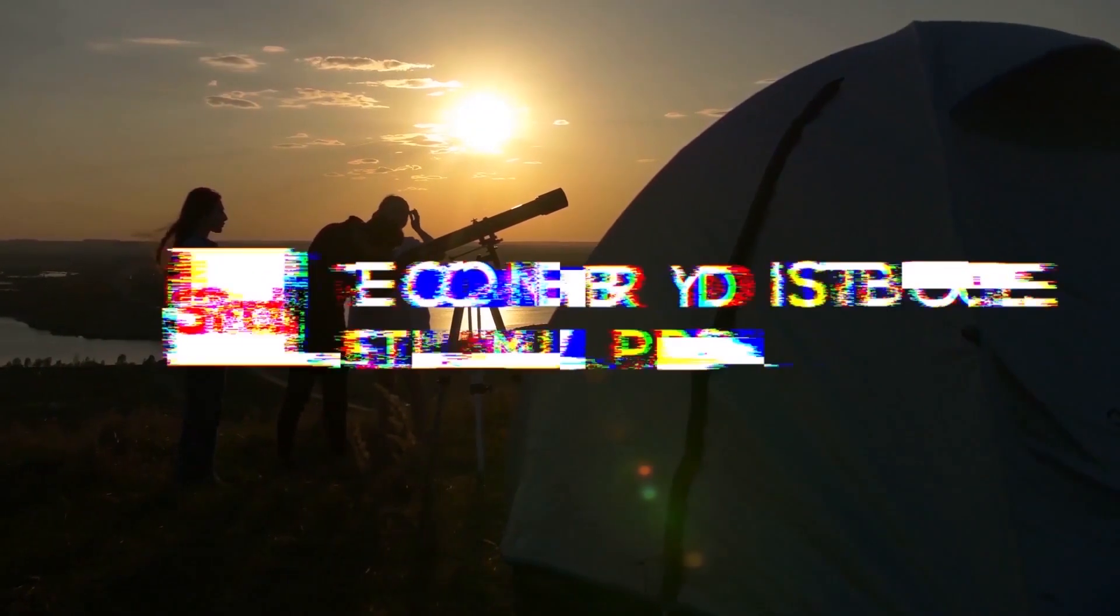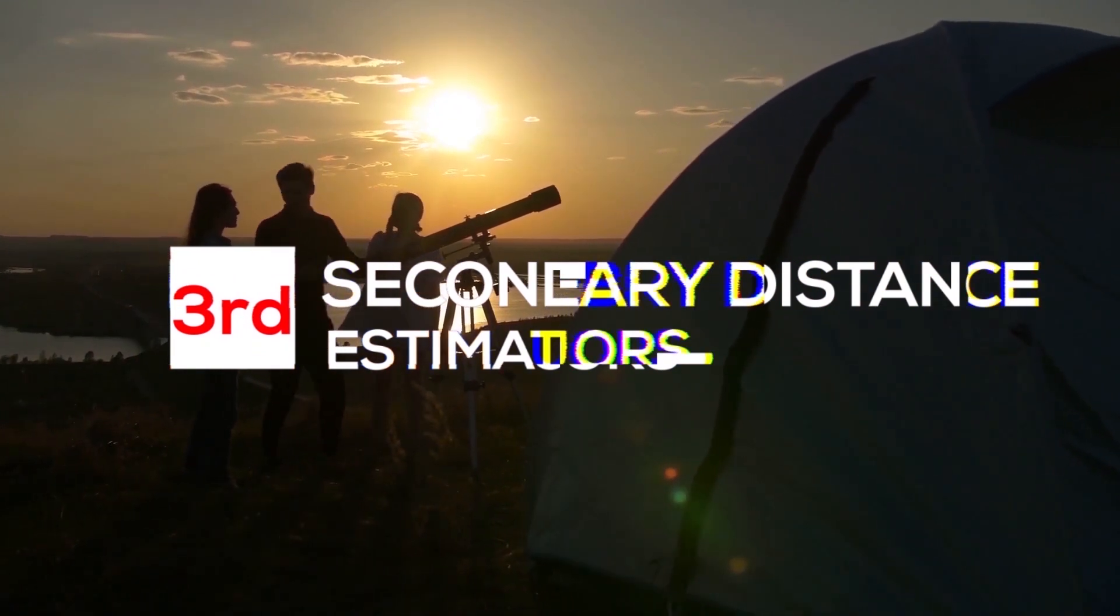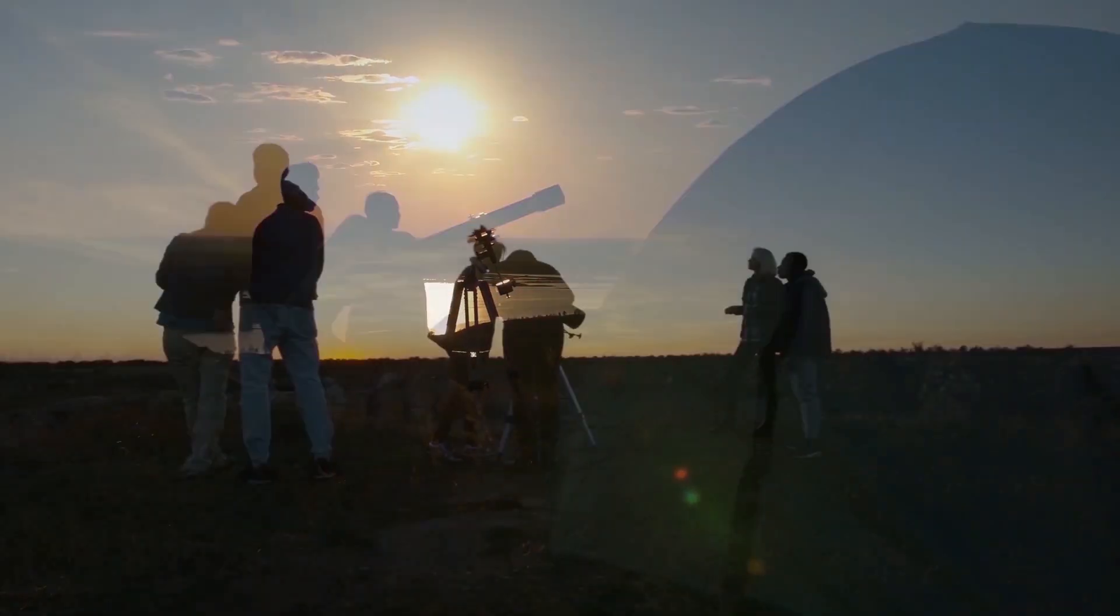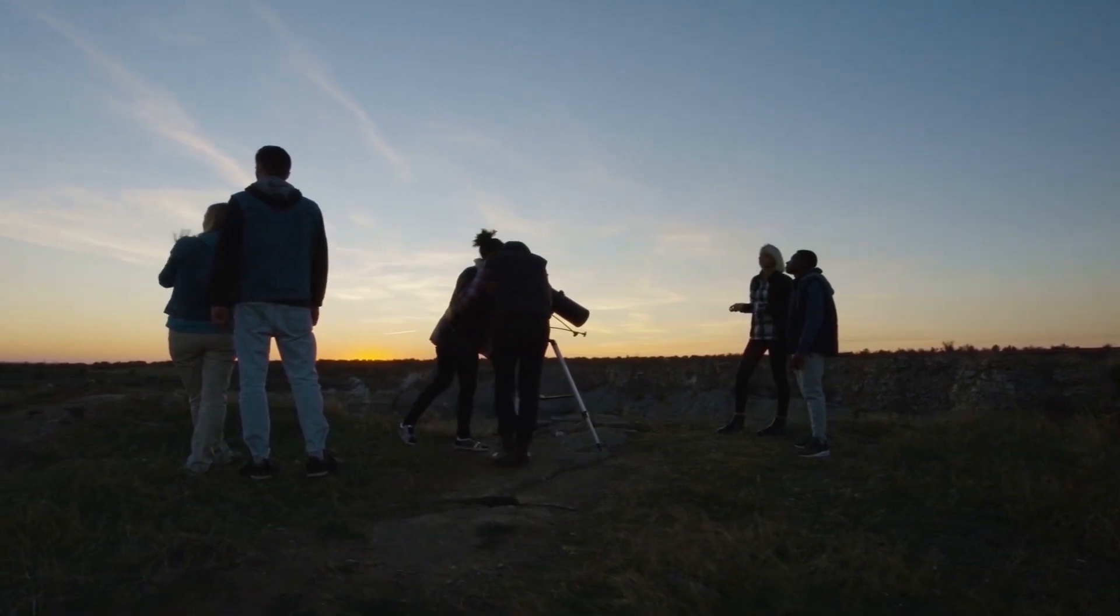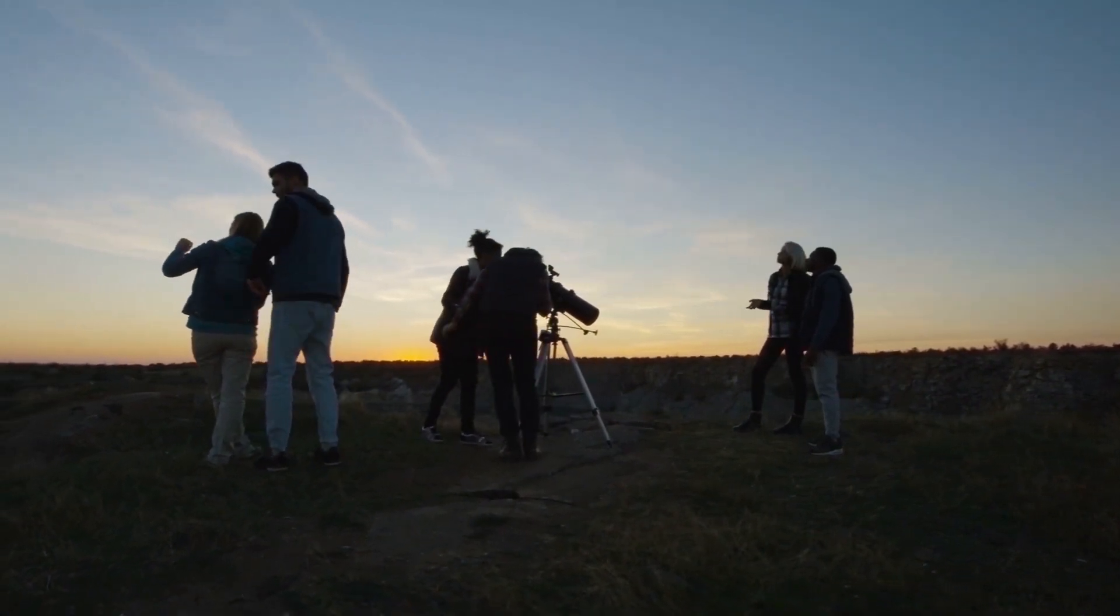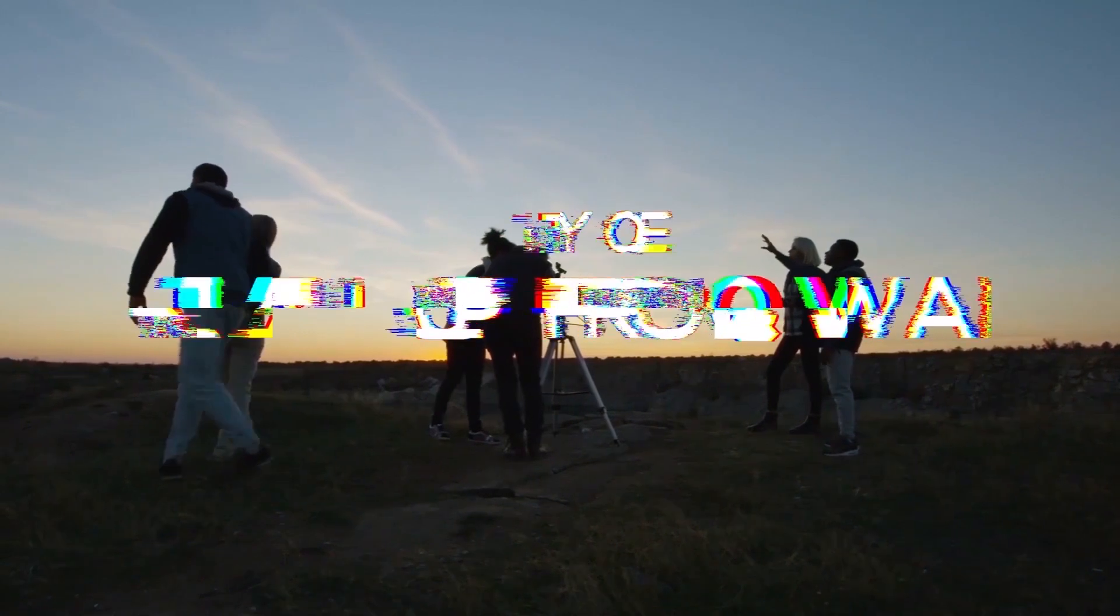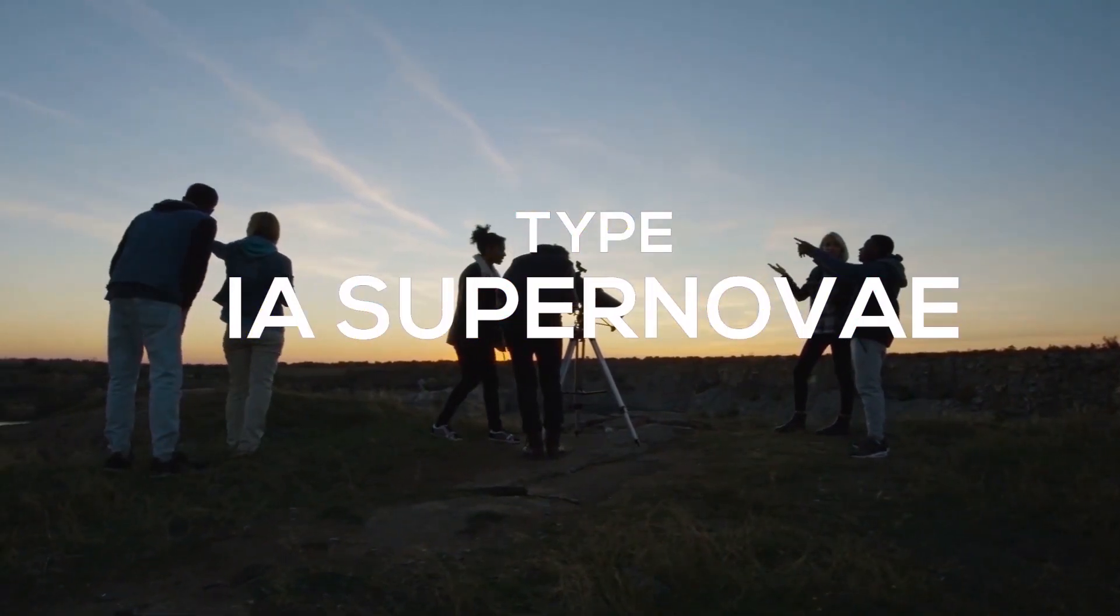Third step, secondary distance estimators. There are a lot of secondary estimators that astronomers use to estimate the distance of a faraway object. But the most efficient one is the type 1A supernovae.